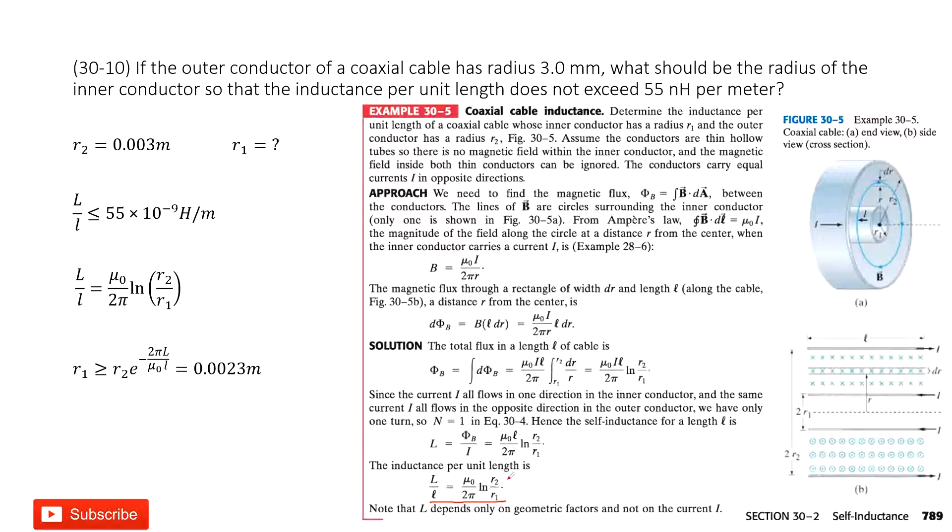So we can directly use it here. If you use it, you can see mu naught is a constant, 2 pi is a constant. So L over length, the inductance over length, is given. And R1 is unknown, R2 is given.